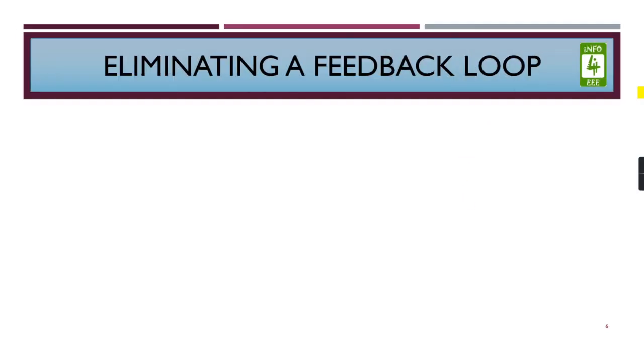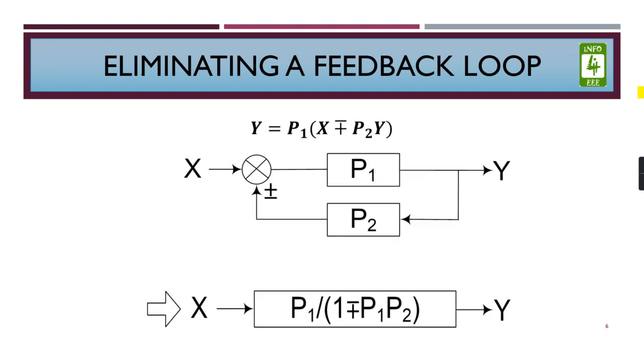Now coming to the next thing, eliminating a feedback loop. Now we have to eliminate a feedback loop. So if you remember the previous lecture of our video series on feedback, you can easily write this equation. This P1 by P2 is equal to this block diagram.